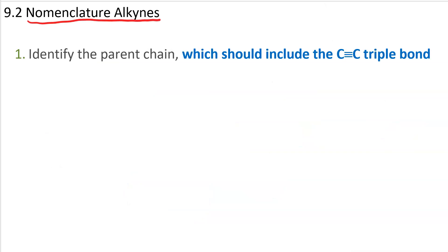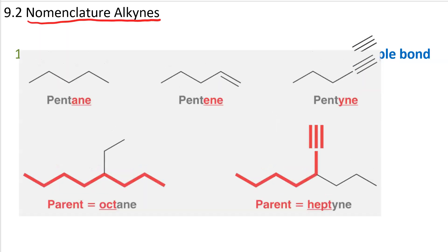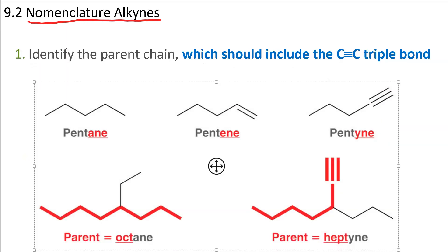When you're naming alkynes, the guidelines are very similar to what we've done in the past. The first thing you've got to do is identify the parent chain. This is the longest carbon-carbon chain that includes the triple bond.